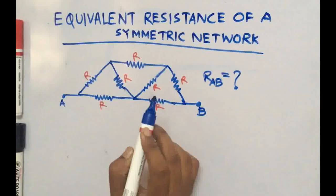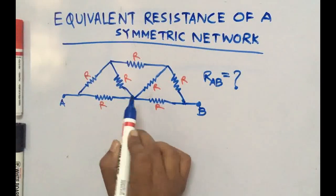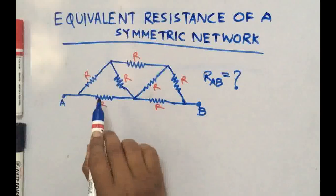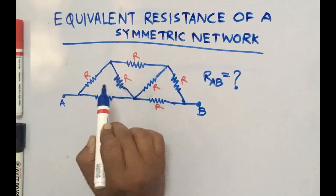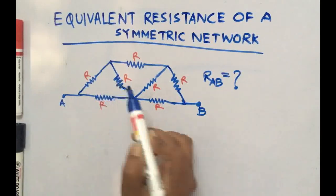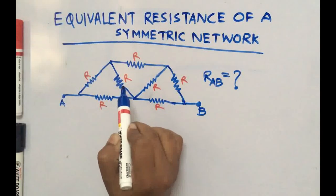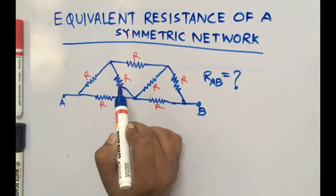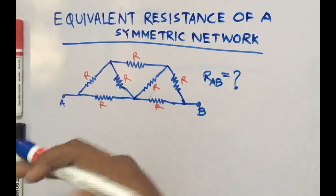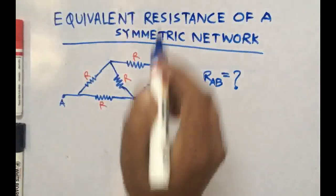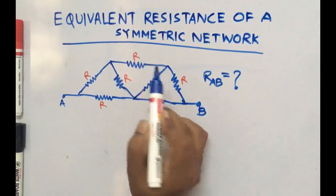Now if you are going to find the equivalent resistance of this network, you can see you cannot classify its resistances in a series or parallel pattern. It will be very difficult to find out which are in series and which are in parallel. So in this kind of question we have to apply the method of symmetric line.